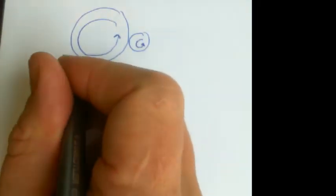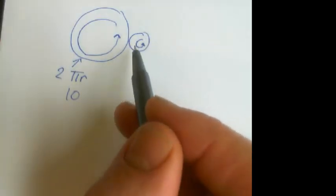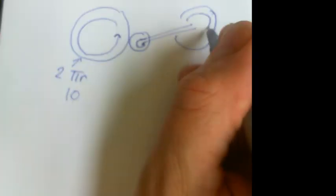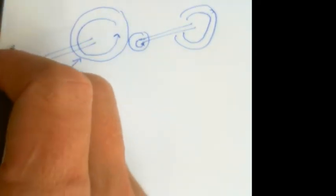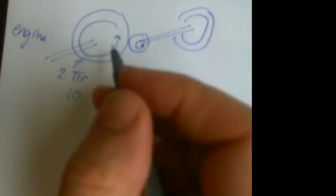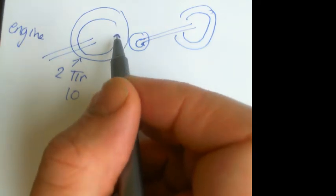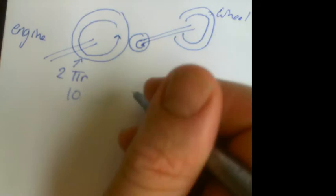Two pi r will be the circumference, and if that circumference is 10 times bigger than this one, then each time the big cog goes round once, this small one will go around 10 times. If that small cog is attached to the wheel of your car, then the wheel will go around 10 times faster than the engine cog. This one goes around one tenth as many times as this one, and this is known as being in a high gear.